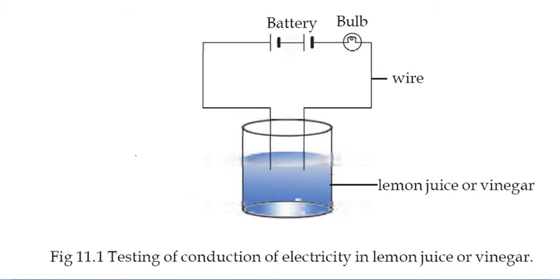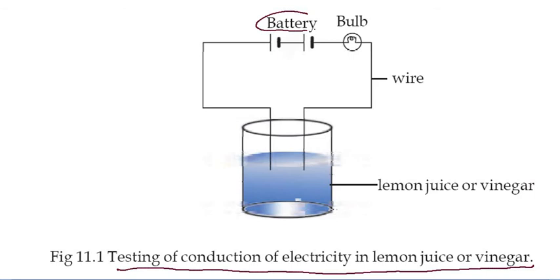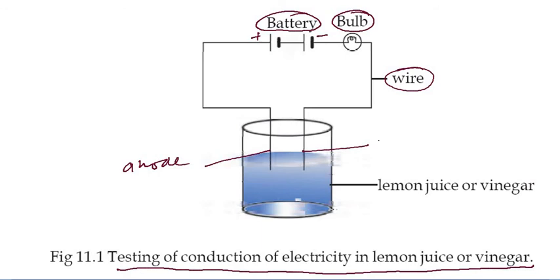Now testing the conduction of electricity in lemon juice and vinegar: a battery is connected with a positive terminal and a negative terminal, a bulb is attached, and wires are connected. Electrodes are dipped into the lemon juice — one electrode becomes the anode and the other the cathode. When electricity passes through the solution, the bulb glows, showing that the solution conducts electricity.